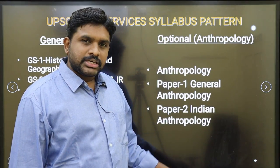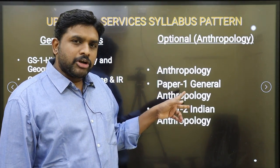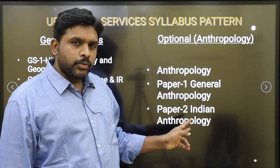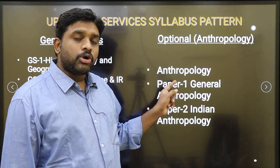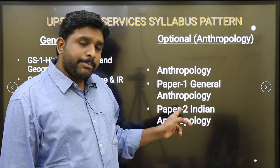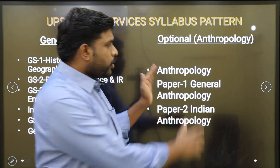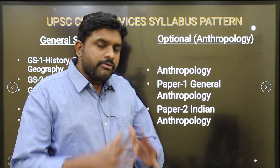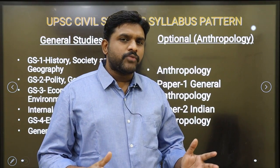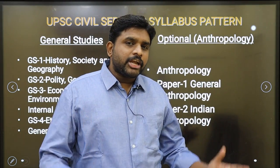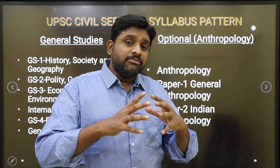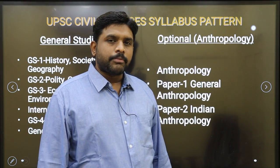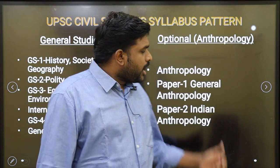Coming back to the optional subject anthropology — you will be having two papers: anthropology paper one and anthropology paper two. Paper one is called general anthropology and paper two is called Indian anthropology. In paper one, we will be doing about the general understanding of anthropology, the world understanding of anthropology, and world anthropologists. These are all things we will be discussing in paper one, which is called general anthropology.